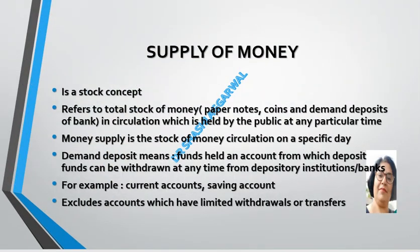So what is the meaning of supply of money? It is a stock concept — it means on a particular day, how much money we have. The supply of money refers to the total stock of money, which includes paper notes, coins, and demand deposits of banks in circulation, held by the public at any particular time. Money supply is the stock of money in circulation on a specific day, like the supply of money on 31st March.